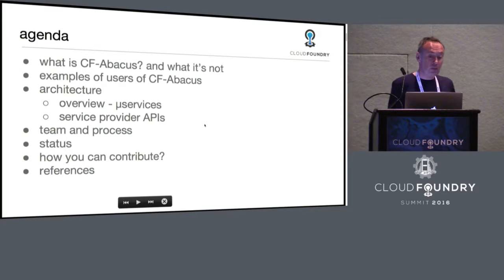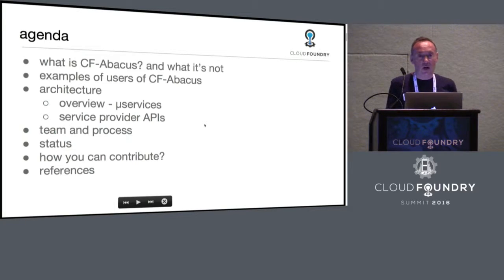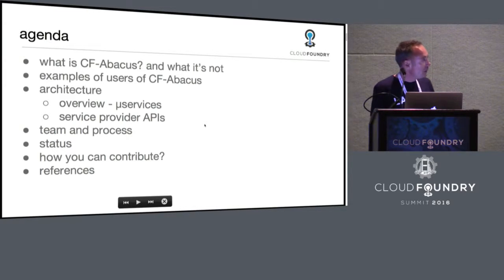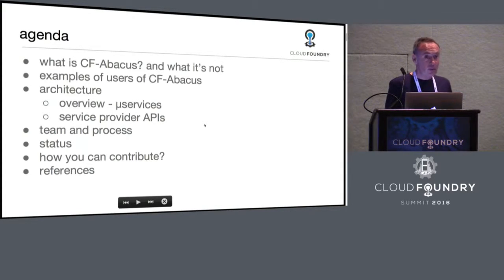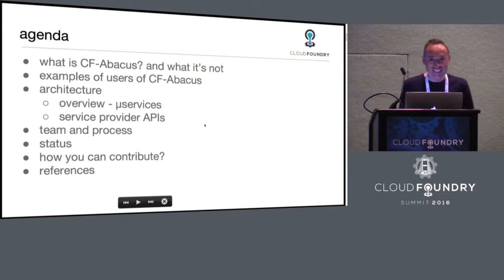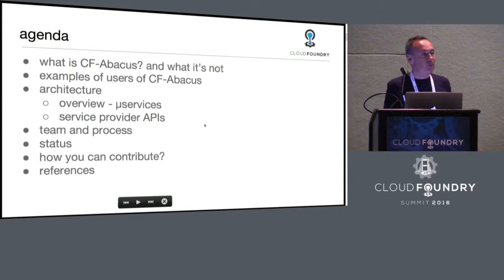I'll briefly go through what the project is about and what it's not. Examples of how you can use it. We'll go through the architecture. The APIs that you can use to submit usage and retrieve usage reports. We'll talk about the team and the development process. The status — we just released a new version of Abacus today.